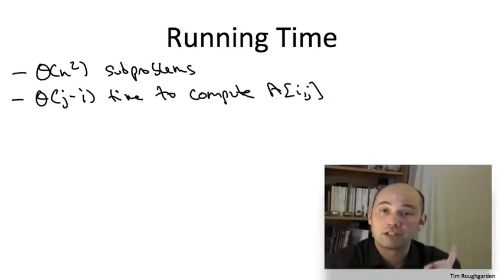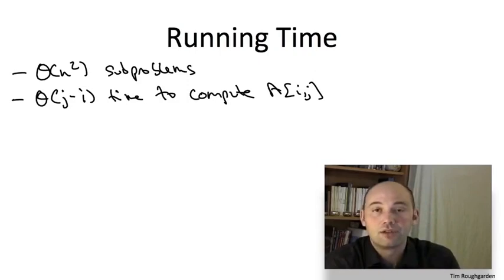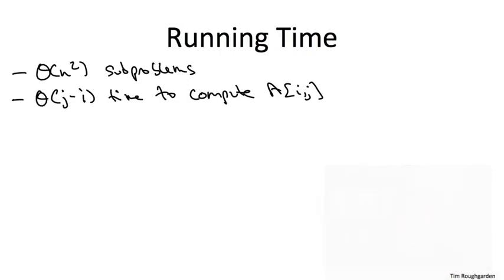We have to try every possible root. Each of the items in our given subproblem is a candidate root, and we try them all. So given a start item of I and an end item of J, there's J minus I plus 1 total items, and we have to do constant work for each of those choices. So there will be some subproblems that we can evaluate quickly in only constant time if I and J are very close to each other. But for a constant fraction of the subproblems we have to deal with, this is going to be linear time, theta of N time.